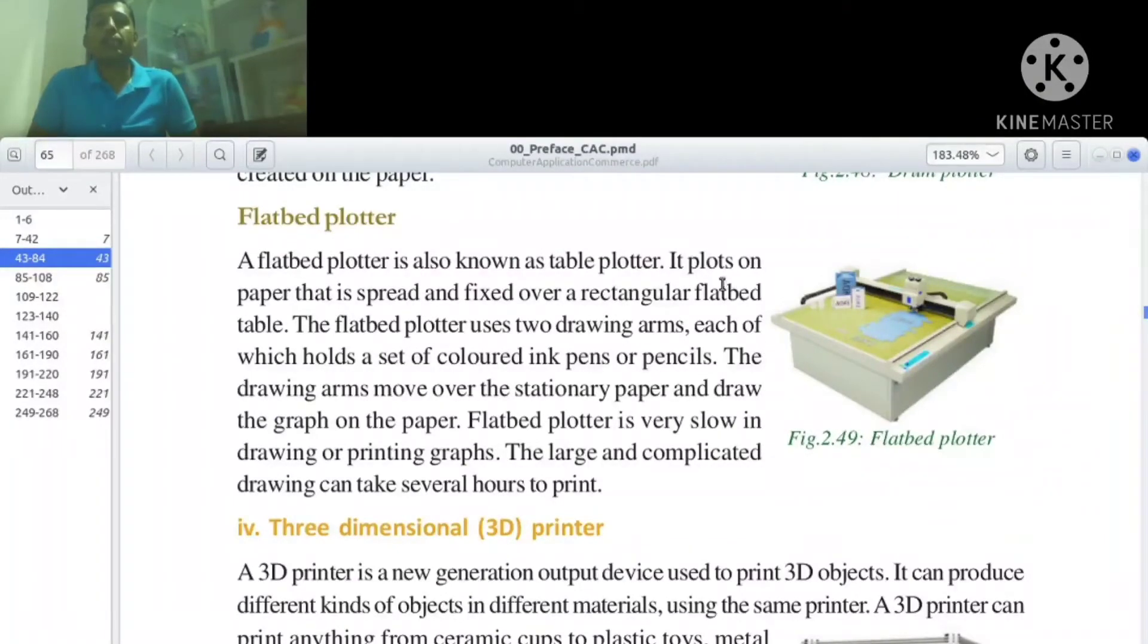A flatbed plotter has a rectangular flatbed table. The flatbed plotter uses two drawing arms, each of which holds a set of colored ink pens or pencils.